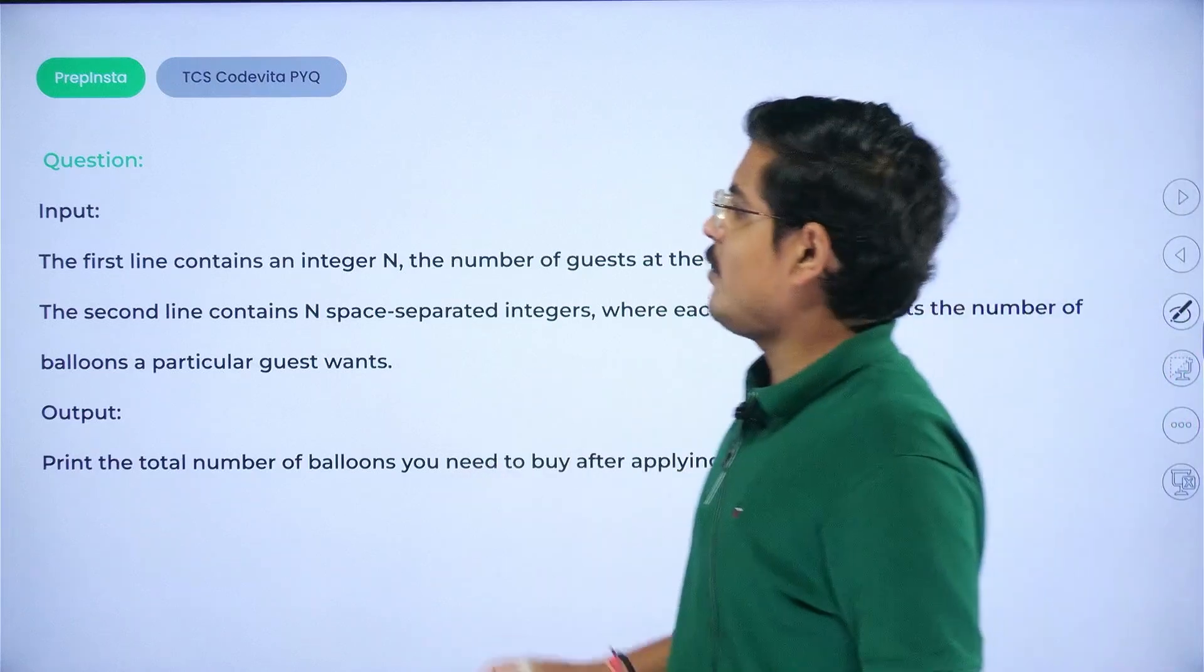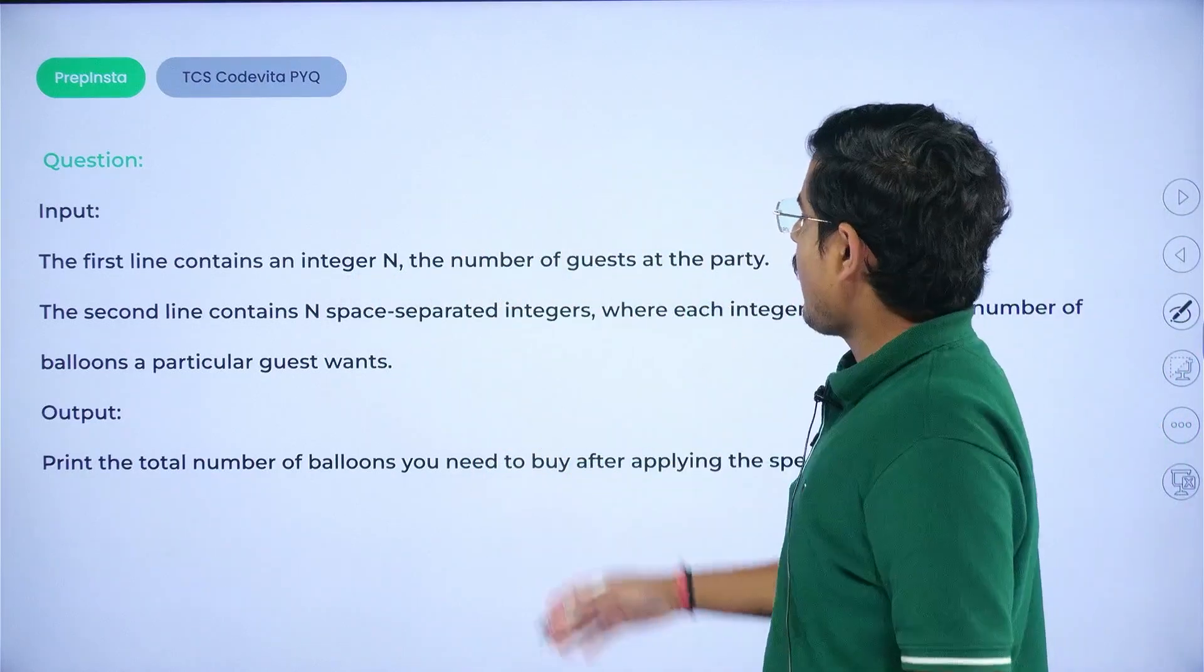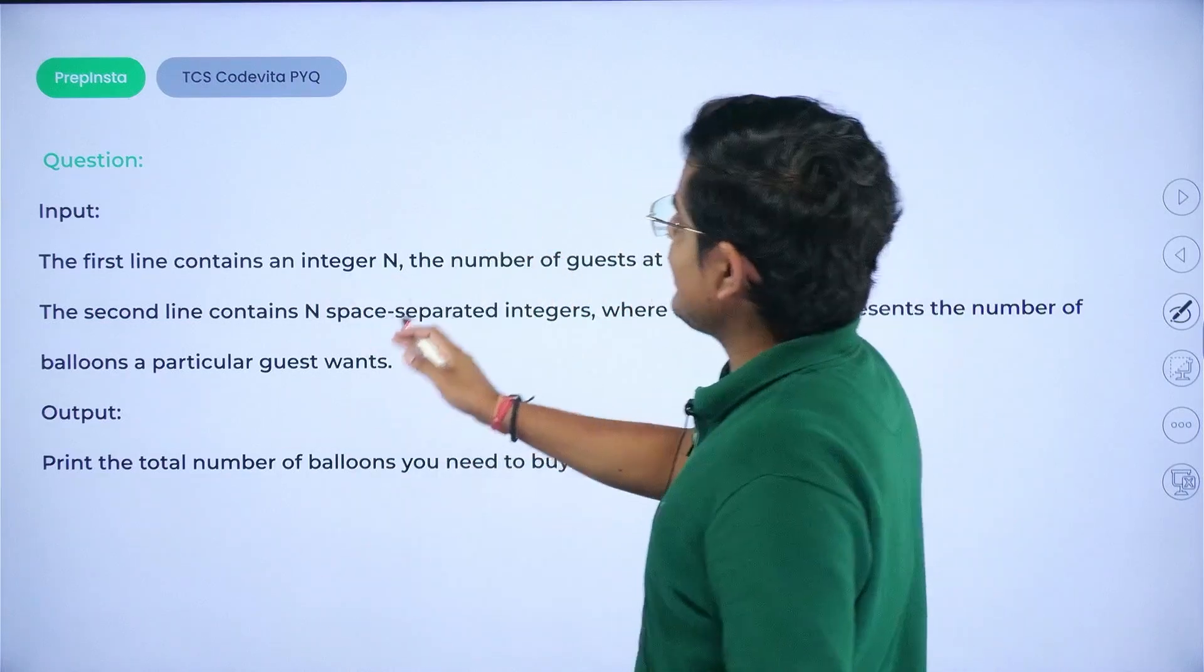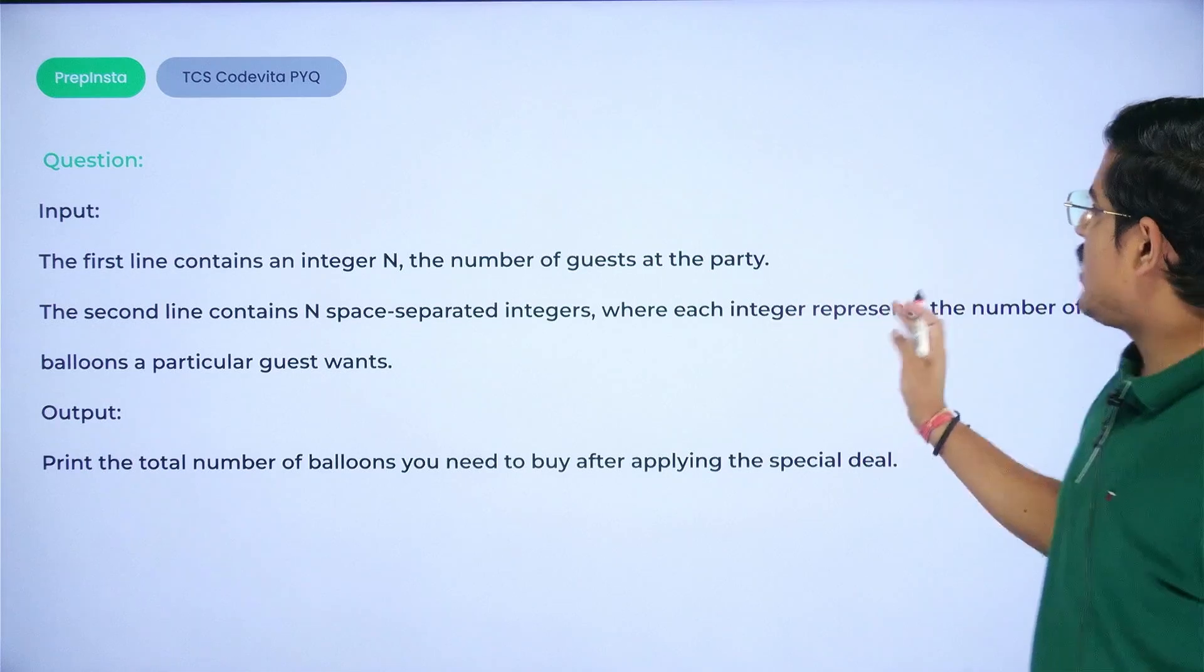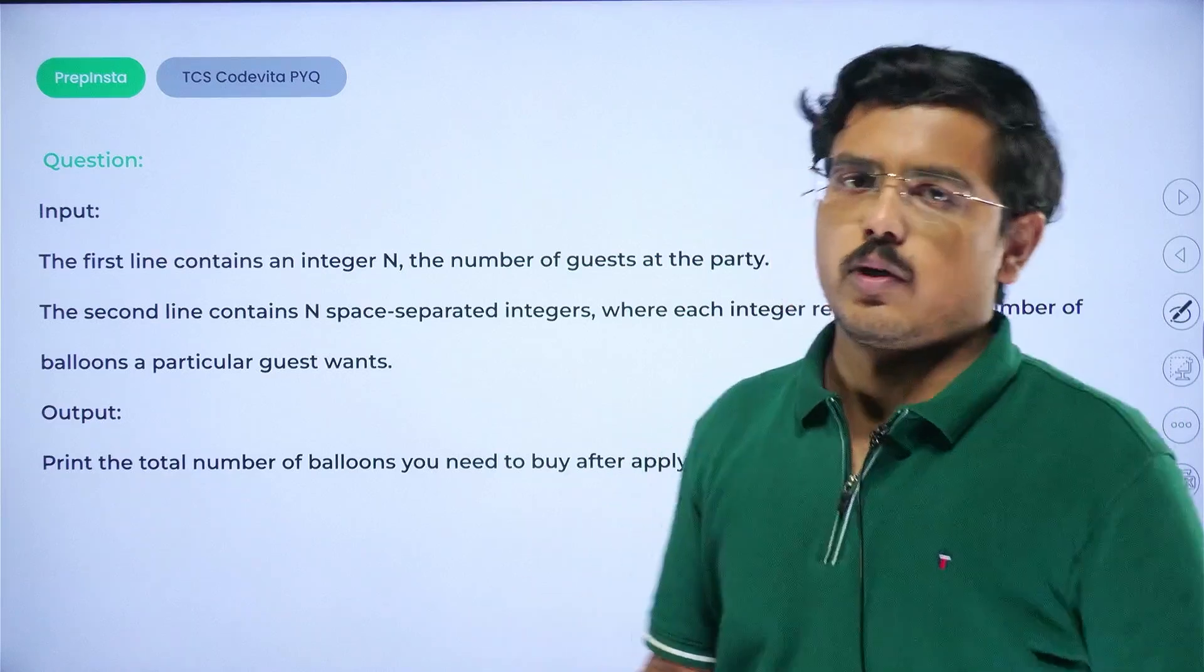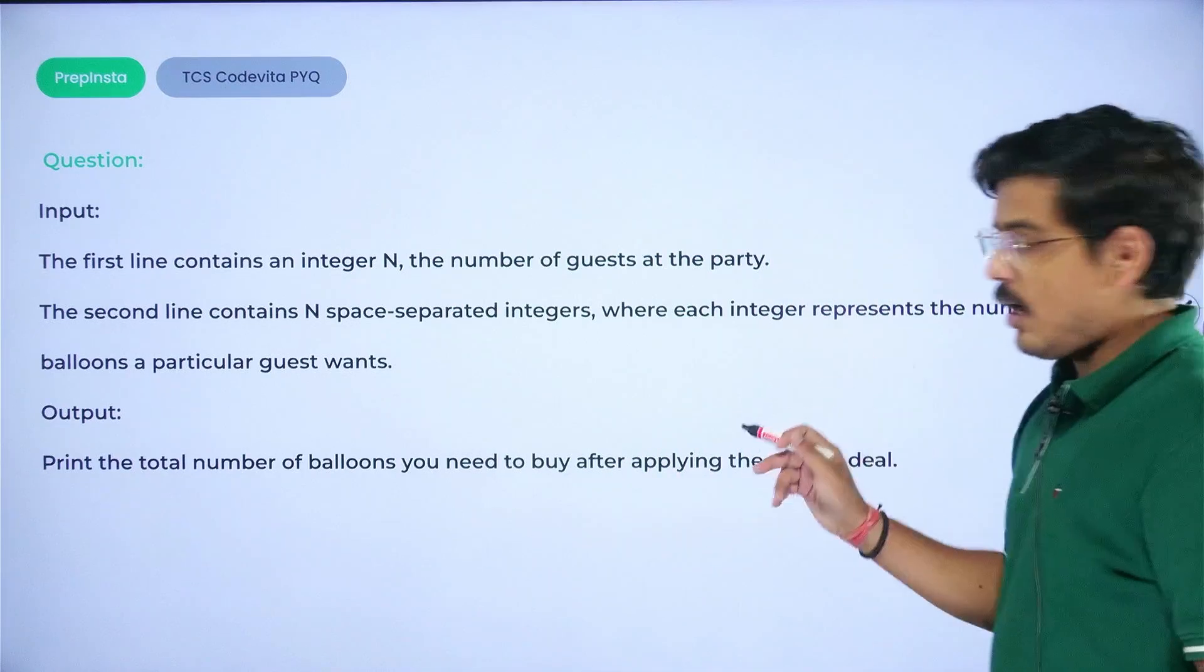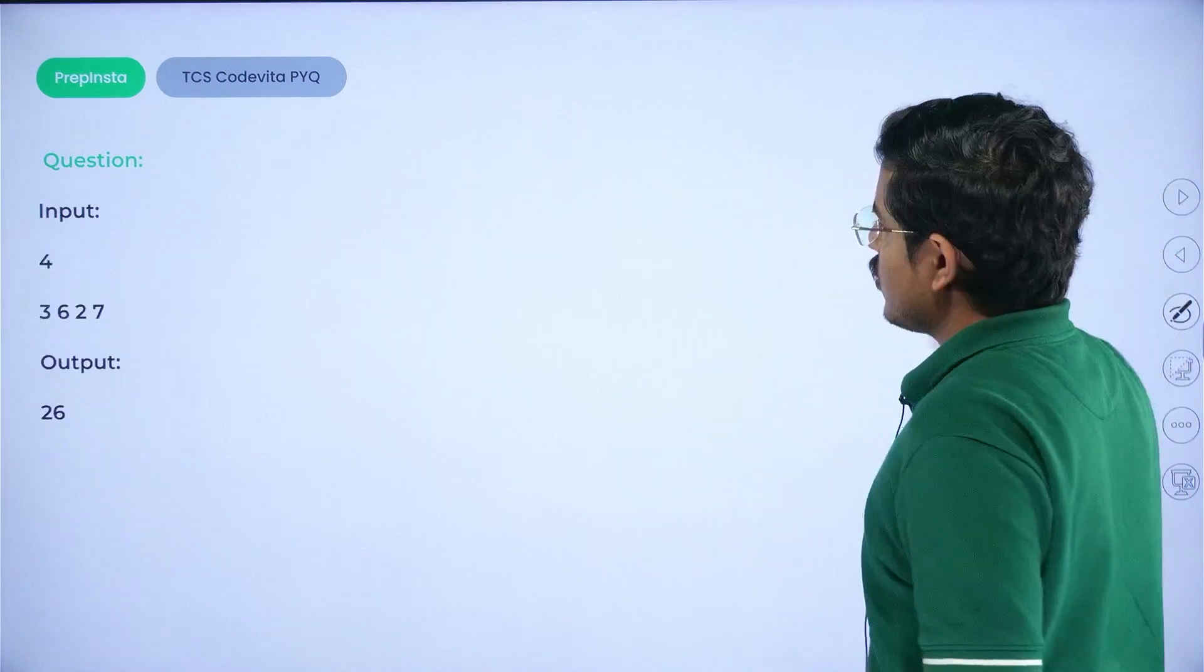Now if I show you what's the input and output format: the first line contains an integer N, the number of guests at the party. The second line contains N space-separated integers where each integer represents the number of balloons a particular guest wants. All you need to do is print the total number of balloons you're going to ship, and that should account for applying the special deal. So let's go ahead and check it out.